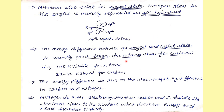The energy difference between the singlet and triplet states is much larger in nitrenes than in carbenes. In nitrenes this difference is approximately 145 kcal/mol, whereas in carbenes it is 32–42 kcal/mol. The reason is that nitrogen is more electronegative than carbon, so the electrons are held more tightly, making the ground state triplet much more stable relative to the singlet.